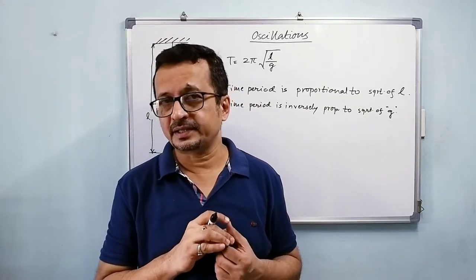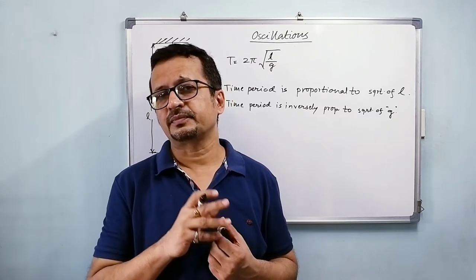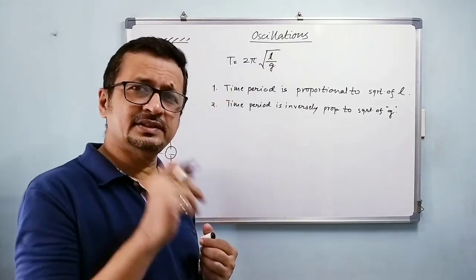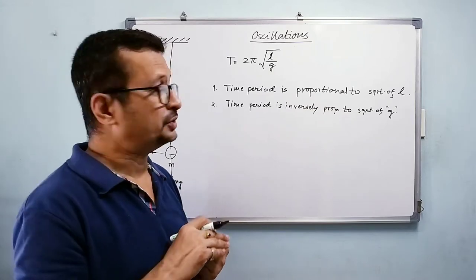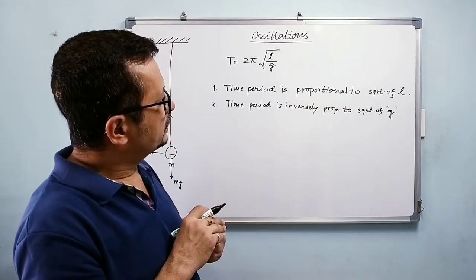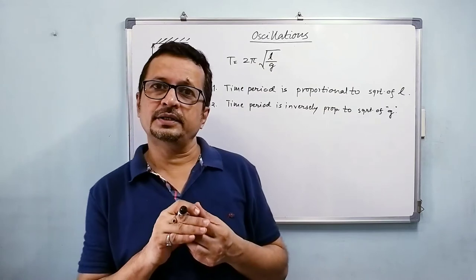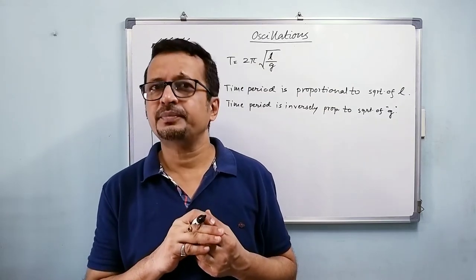Because at poles the value of acceleration due to gravity is greater than that at the equator. We have seen that in motion in circular motion. So at the poles the time period would be smaller, at the equator it would be larger.